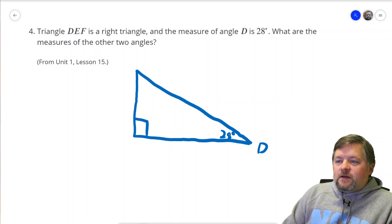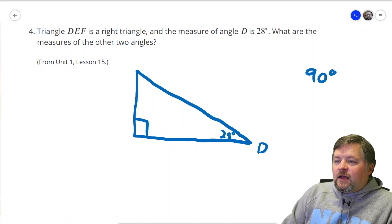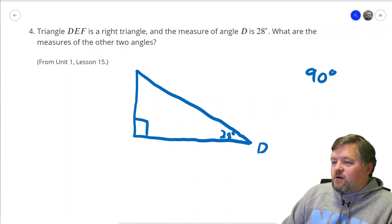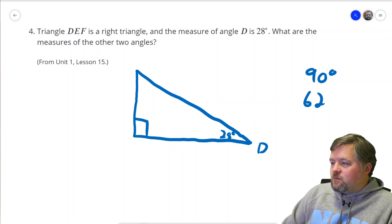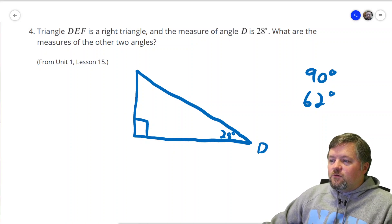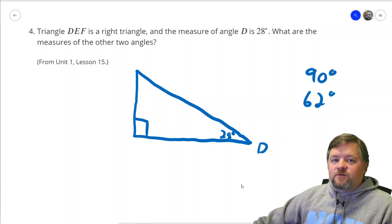Well, one of them, it's a right triangle, so one of them is 90 degrees. And the other one, these have to have a sum of 180 degrees. 180, subtract this 90, is 90. Subtract another 28. So our other angle has to be 28 degrees less than 90, which is 62. Because 62 plus 28 plus 90 will give us a 180 degree angle sum, which is the sum of all the angles of a triangle.